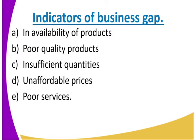The second indicator is poor quality products. For example, you may find hotels in a place producing poor quality food — if you improve the quality, you can have that business. Number three is insufficient quantities — the products are inadequate or not enough. Number four is unaffordable prices: the goods are there but sold at high prices, so you can offer them at fair prices.